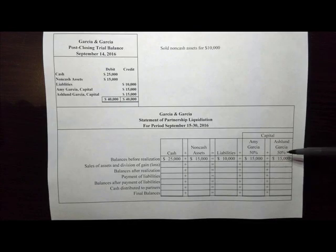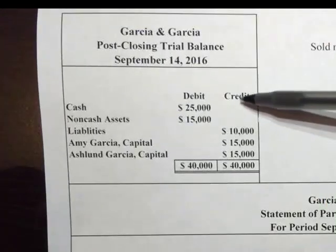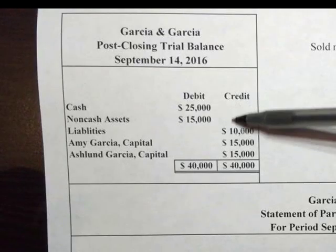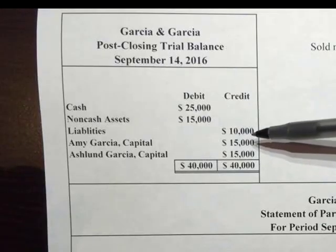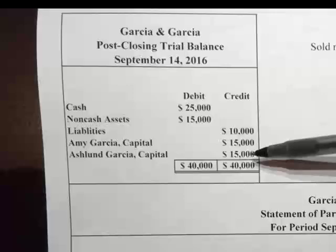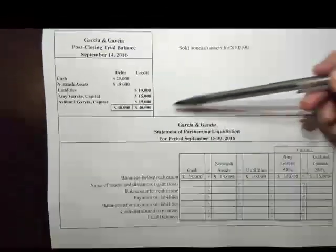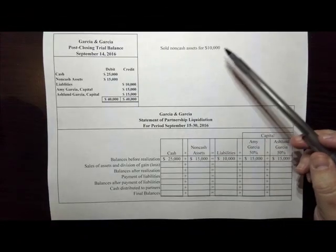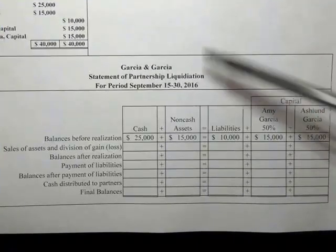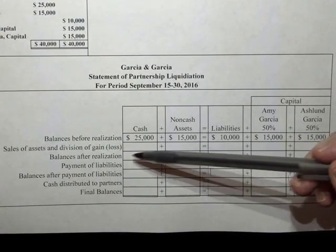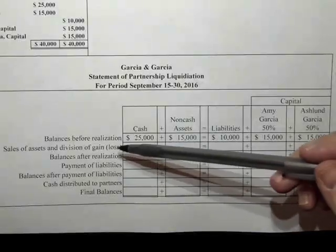Amy Garcia and Ashland Garcia are 50-50 partners with cash assets of $25,000, non-cash assets of $15,000, liabilities of $10,000, and Amy and Ashland each have $15,000 in their capital accounts. They have sold their non-cash assets for $10,000, which is going to leave them with a $5,000 loss.